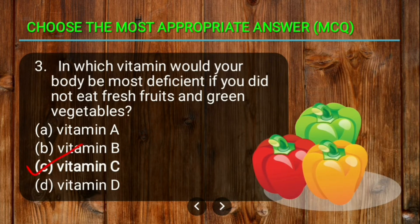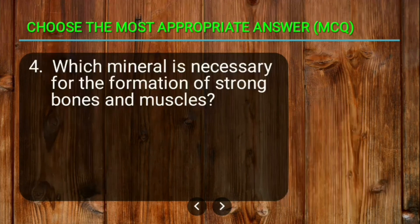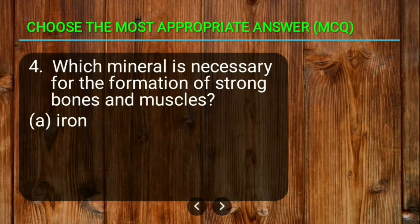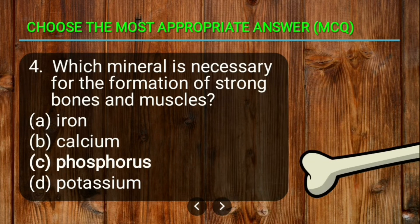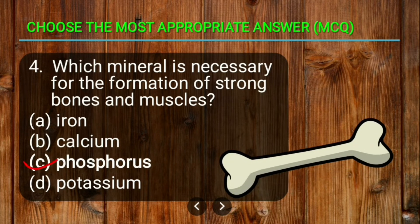The correct answer is Vitamin C. Question four: which mineral is necessary for the formation of strong bones and muscles? The options are iron, calcium, phosphorus, and potassium. The correct answer is phosphorus. Phosphorus is important for the formation of strong bones and muscles.